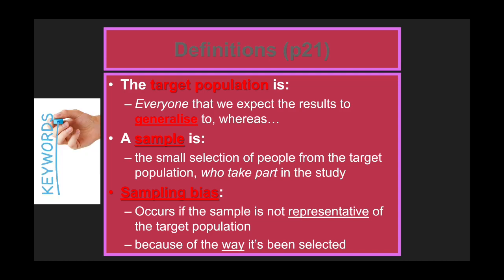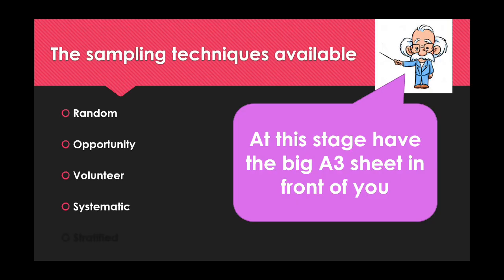There are five different sampling techniques available to a researcher, and we went through the definitions in yesterday's lesson. If you have the big A3 sheet in front of you, some definitions have already been filled in and some are missing. You can pause this now and fill in the missing ones if you can remember them, or fill them in with me as we go through. The easy way to remember them is ROVS: random, opportunity, volunteer, systematic, and stratified.